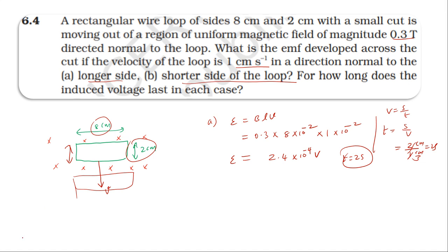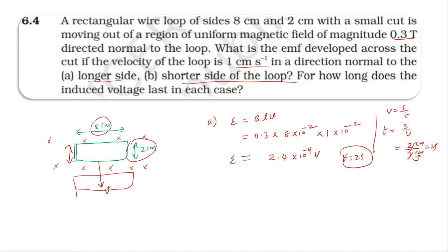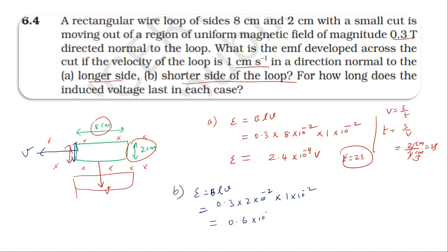For Case 2, the loop moves with the shorter side perpendicular to the velocity direction. The effective length is 2 centimeter. Induced EMF equals BLv: B is 0.3, L is 2 centimeter which is 2 into 10 power minus 2, v is 1 into 10 power minus 2. The answer is 0.6 into 10 power minus 4 volt.